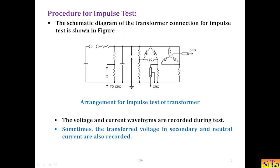The voltage and current waveforms are recorded during test. So, it is necessary to record the voltage as well as current waveform. Sometimes the transferred voltage in secondary and neutral current are also recorded. So, when we want to record the neutral current and the secondary current or secondary voltage, we have to use DSO. Here I have shown the neutral point recording of the neutral current.